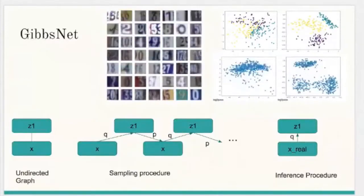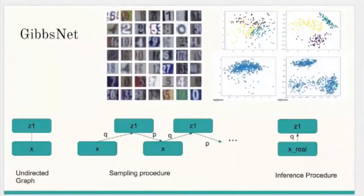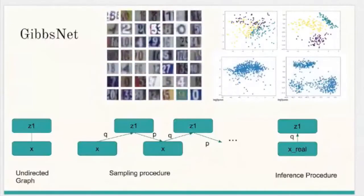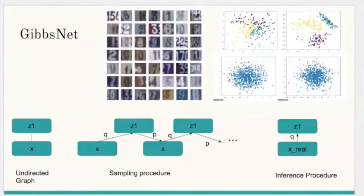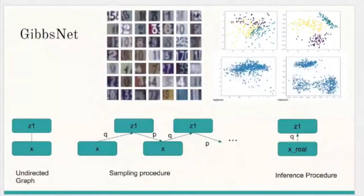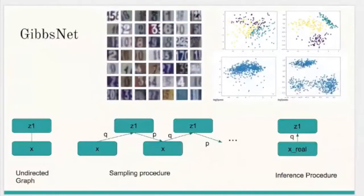Achieving the expressiveness and flexibility of an undirected latent variable model, GibbsNet does away with the need for an explicit P(Z) and has the ability to do attribute prediction, class conditional generation, and joint image-attribute modeling in a single model which is not trained for any of these specific tasks.